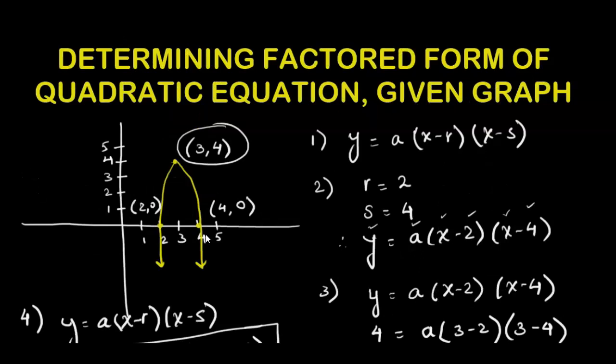To summarize everything, if we need to determine the factored form of quadratic equation, then we always need to find or fill up 3 things: r, s, and a value. r and s would be the numbers or the x-intercepts that we can easily read from the graph as the parabola is going to meet the x-axis at these two points.